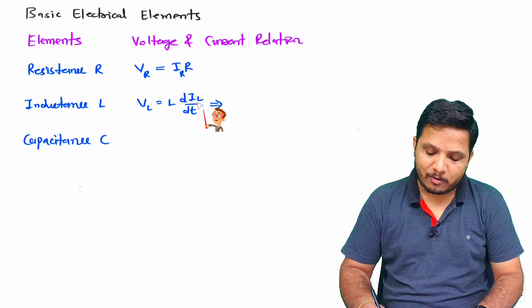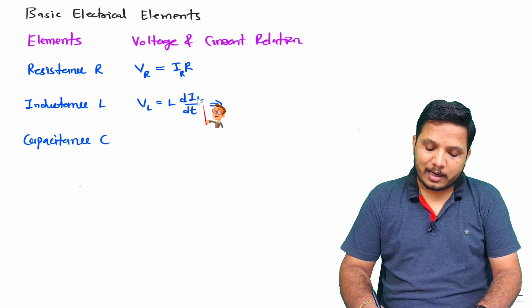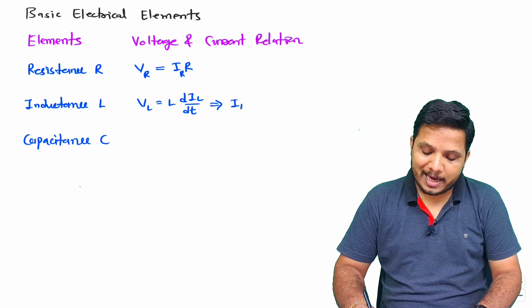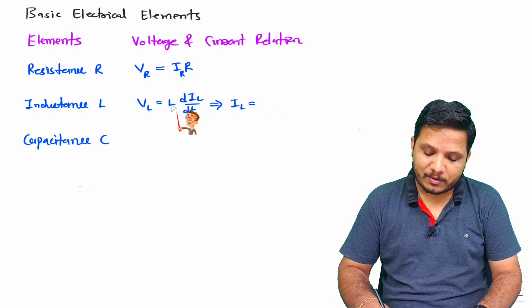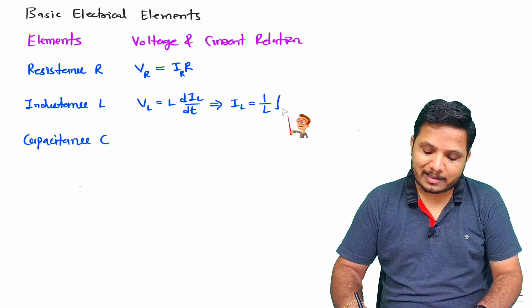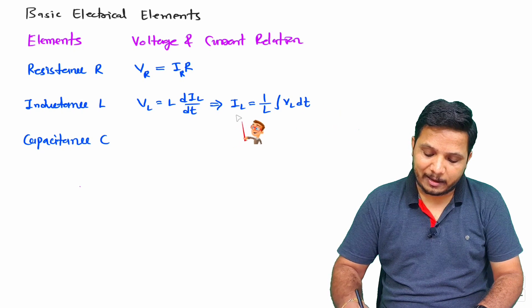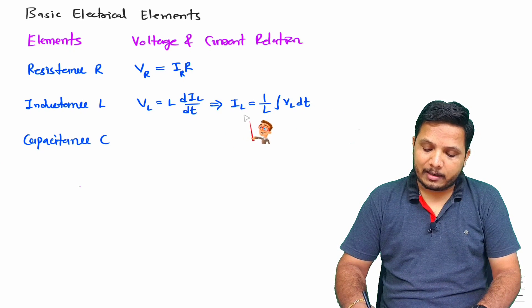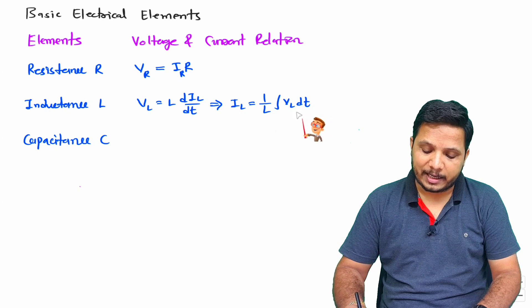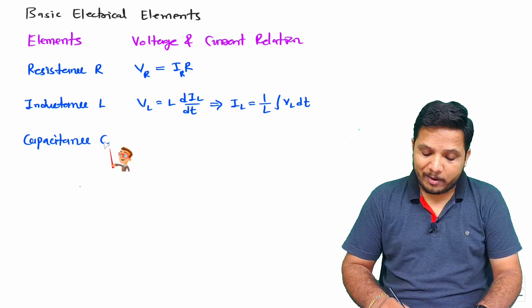Based on that equation, you can also find the current through the inductance given the voltage. L moves to the denominator and differentiation translates to integration, so IL equals (1/L) times the integral of VL dt. The current based on the voltage across the inductance is IL = (1/L) ∫VL dt.